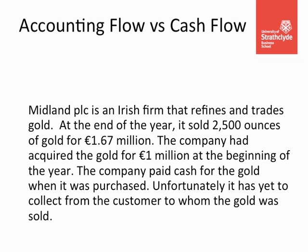Let's start with a simple example from Chapter 1 of the book. We are looking at a hypothetical company called Midland PLC that trades gold. At the end of the year, the company has sold 2,500 ounces of gold for a total of 1.67 million euros. The company paid 1 million euros for the gold at the beginning of the year. The difference between accounting flow and cash flow arises from when payment occurs and how we account for these transactions.